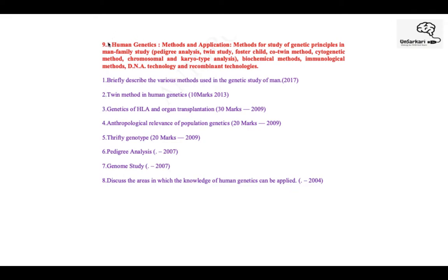Next is the technical unit on human genetics. We studied genetic principles, family studies, pedigree analysis, biochemical methods, and more. A question says: describe briefly the various methods used in genetic study — all the methods you studied are what you have to describe. There are also direct questions on the twin method, genetics of HLA and organ transplantation, anthropological relevance of population genetics, pedigree analysis, and genome study.